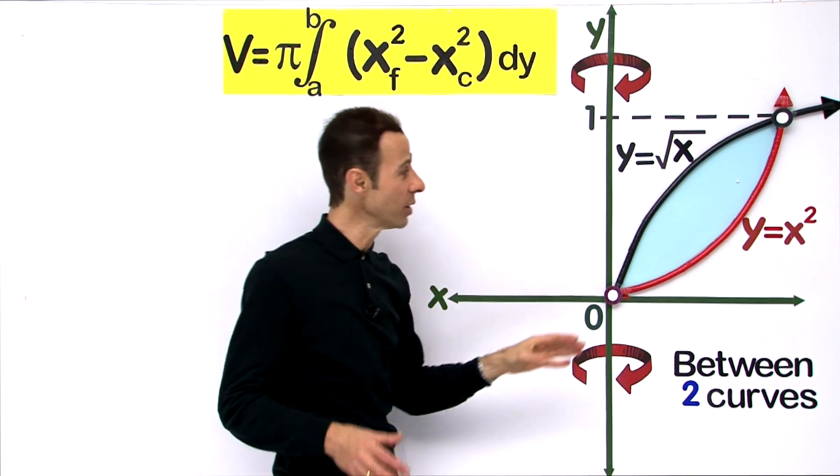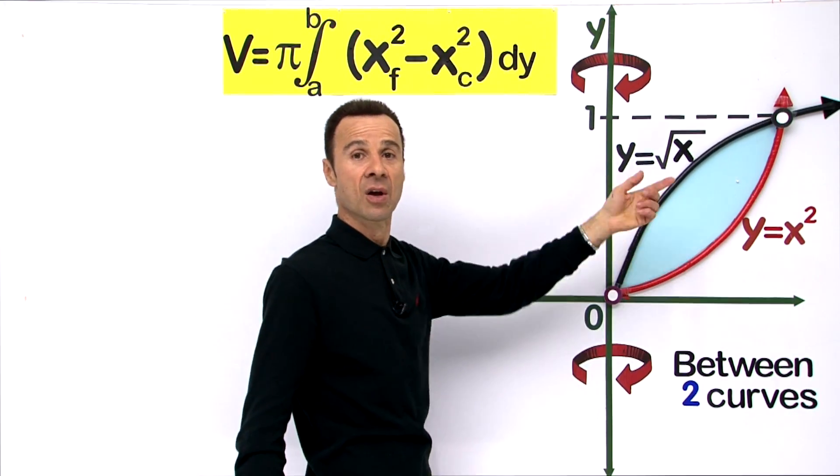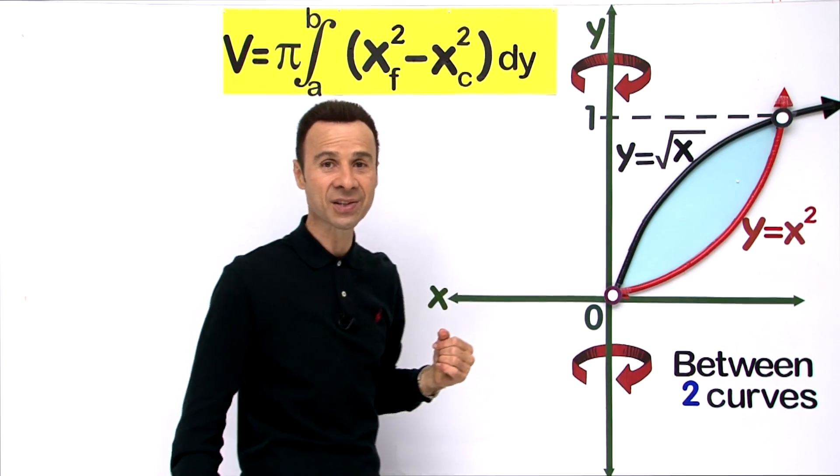We have two functions working in between. This is the region in light blue between the two curves, and it is revolving and generating a solid of volume around the y-axis.